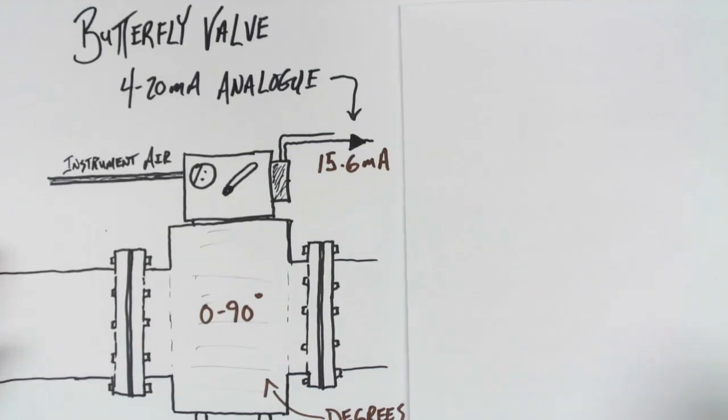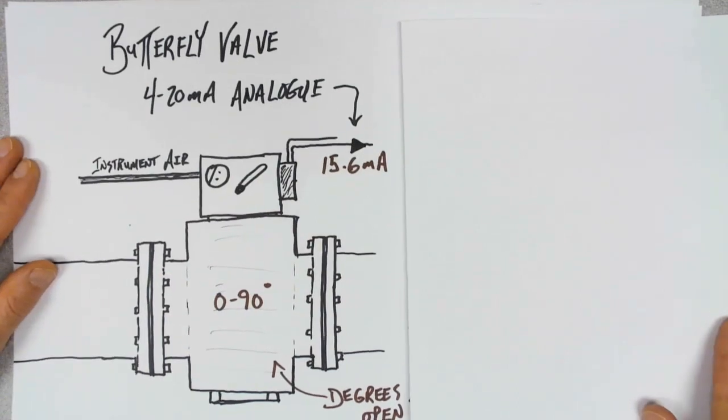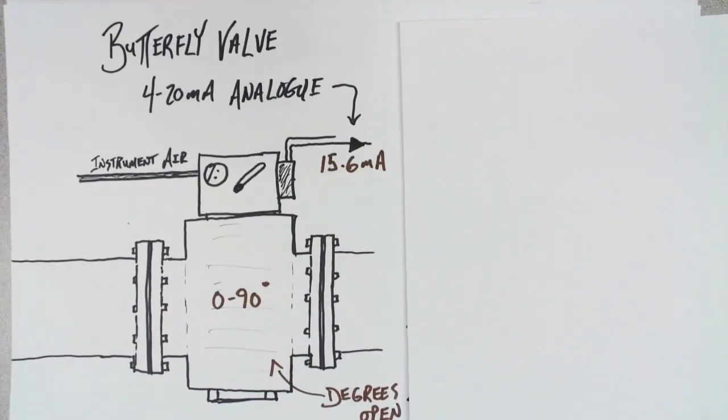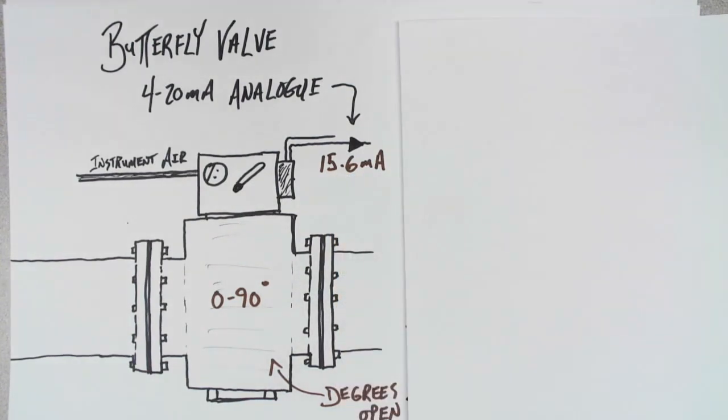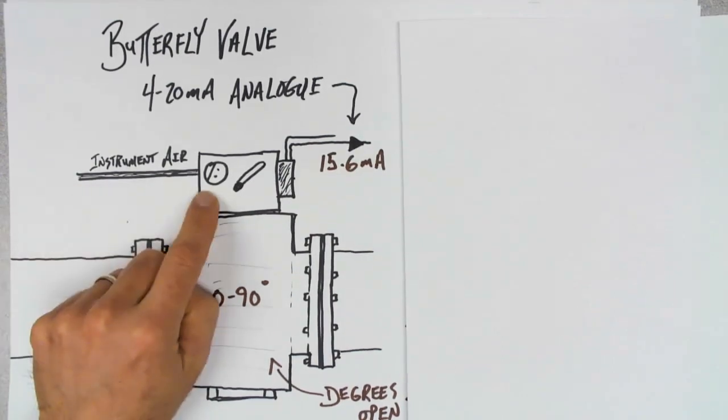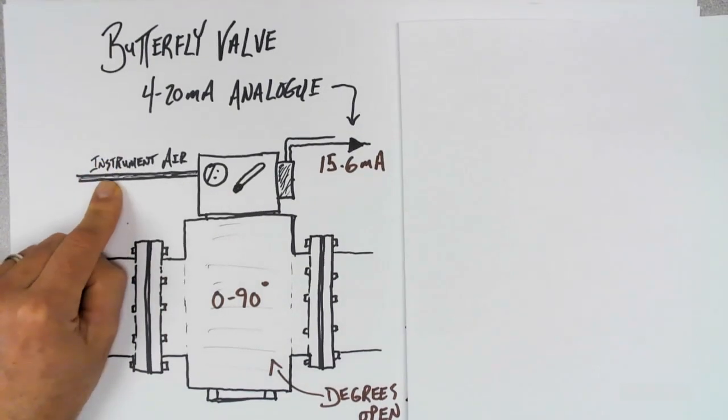The output we're going to look at is a butterfly valve. The butterfly valve is going to operate on 4 to 20 milliamp analog value. 4 to 20 milliamp analog value, and we're actually measuring 15.6 milliamps. If we take a look at how this system will operate, it's actually going to derive energy to move the humongous valve in here through instrument air or air pressure.